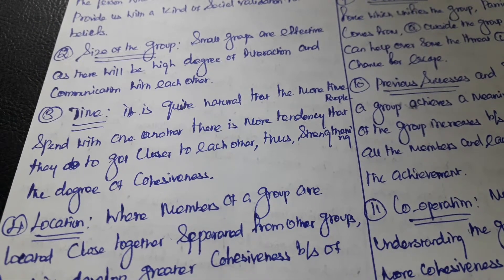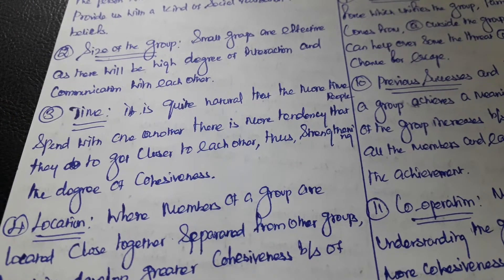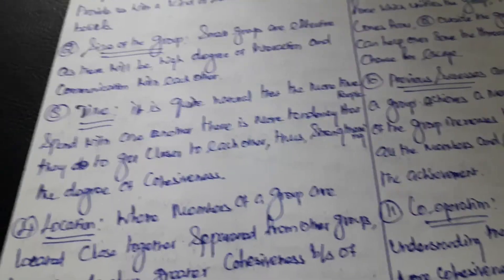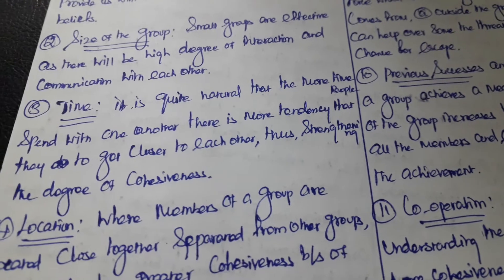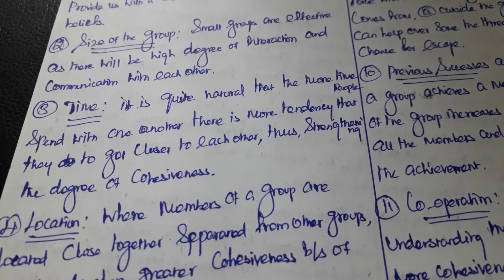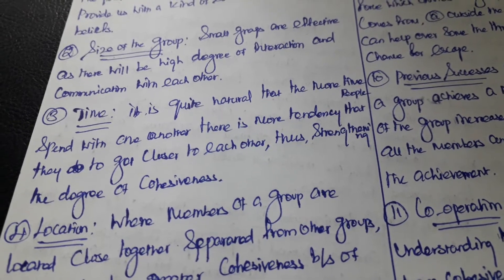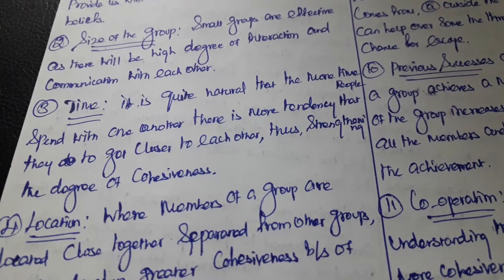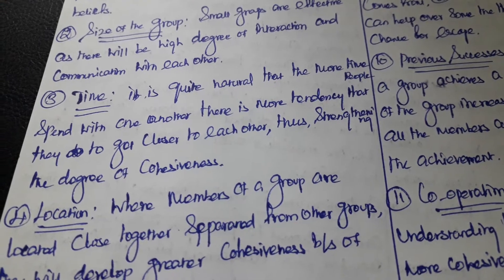The next factor is time. It is quite natural that the more time people spend with one another, the more tendency they have to get closer to each other, thus strengthening the degree of cohesiveness. If group members spend a lot of time with one another, there is a greater possibility of closeness within the group, increasing group cohesiveness.